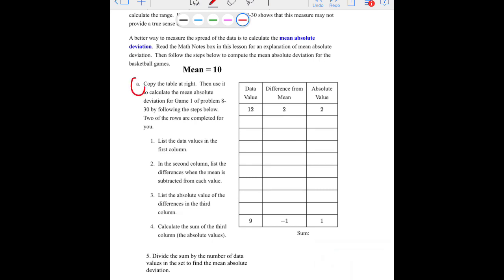You want to copy the chart right here into your math notebook. Make sure you're labeling all your problems like usual. So in Part A, you want to follow each step carefully. It is a really good way to solve for the mean absolute deviation. I think CPM did a good job explaining each step of the way. So make sure you read carefully. So Part 1 is to list the data. So you might have to go back and look at 8-30. Second step is to find the difference.